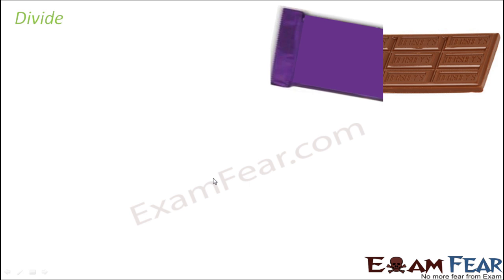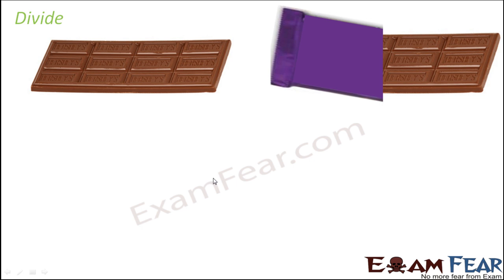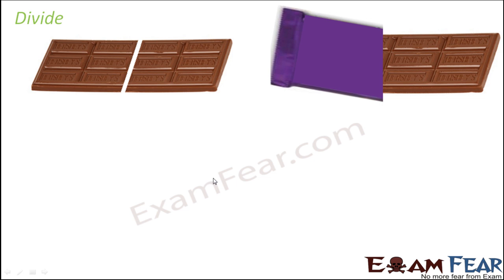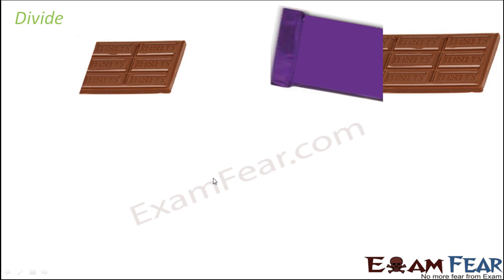Let us look at an example. What you see on the screen is a bar of chocolate. Let's say you have a complete bar of chocolate, but your mom strictly told you that you can only use half of it — the remaining half you need to keep for somebody else. So only half of the chocolate is available to you.